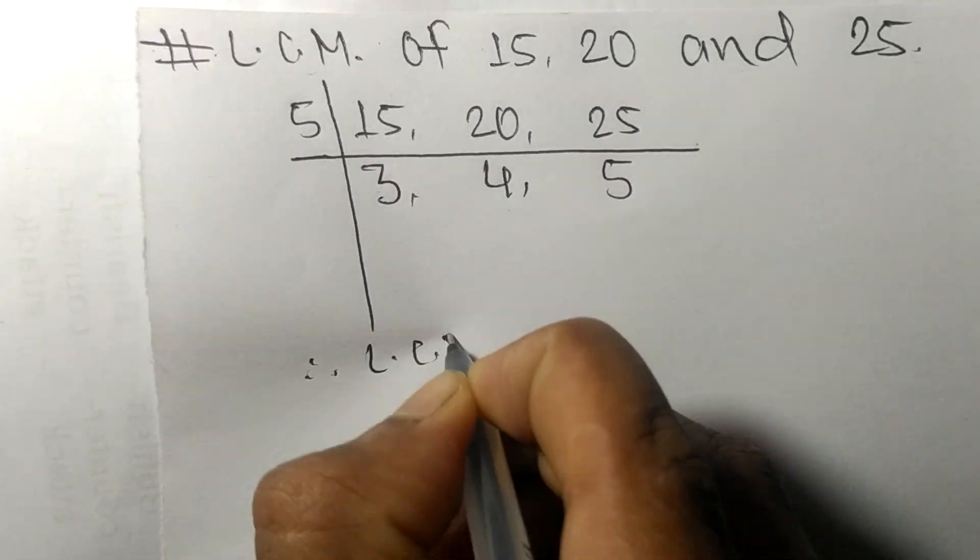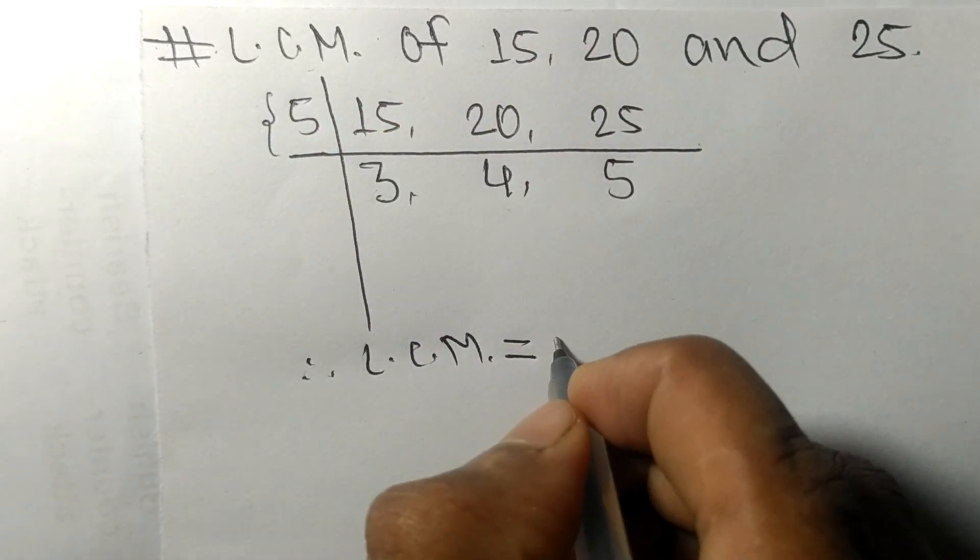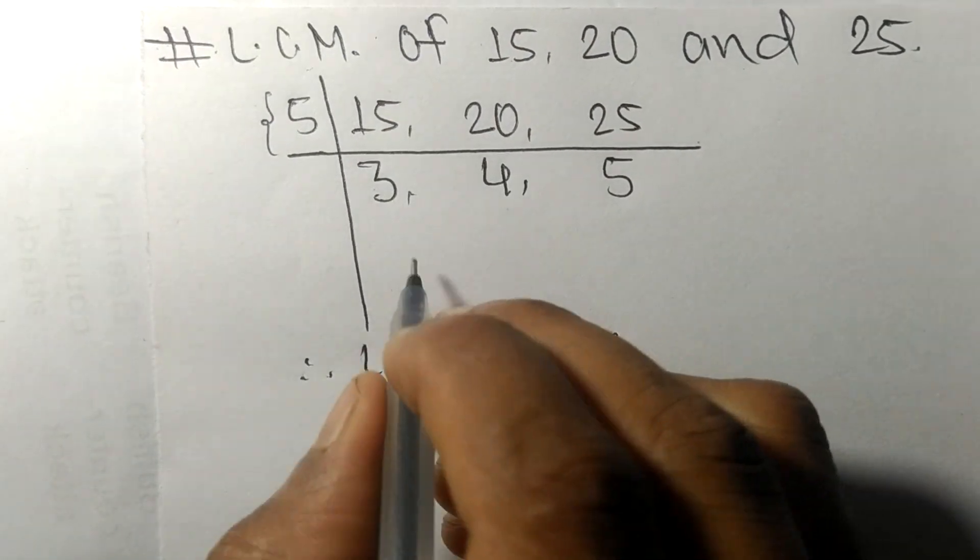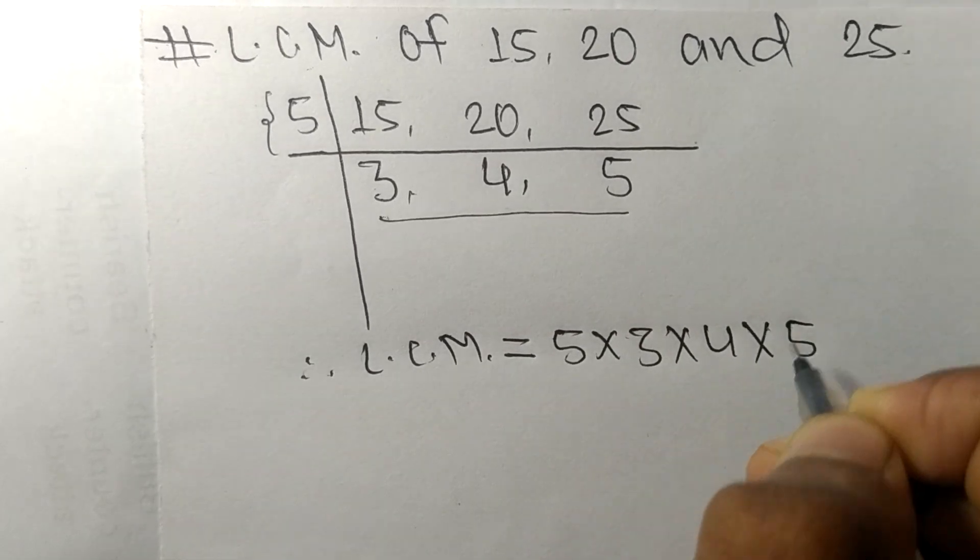Therefore its LCM is equal to, from this side it is 5, from this side it is 3, 4, and 5.